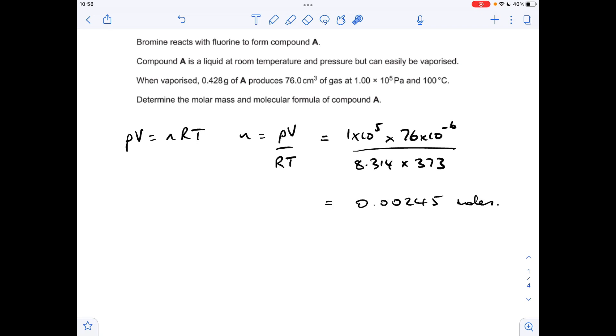So we'll just work out the MR now. So mass over moles gives 174.6. So it's a bit of trial and error now.